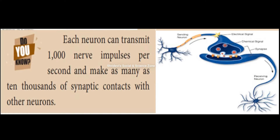How many nerve impulses can transmit a second? A thousand nerve impulses can transmit a second, and makes as many as 10,000 synaptic contacts with other neurons. One small nerve impulse can transmit 10,000 contacts in the brain.